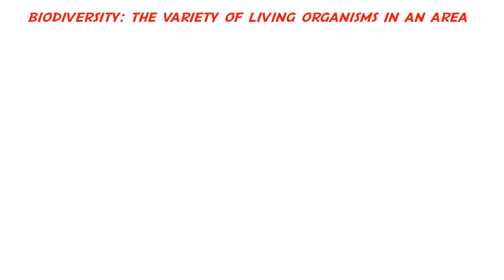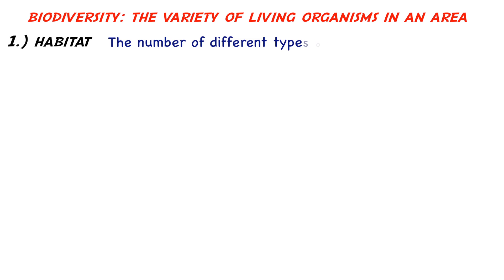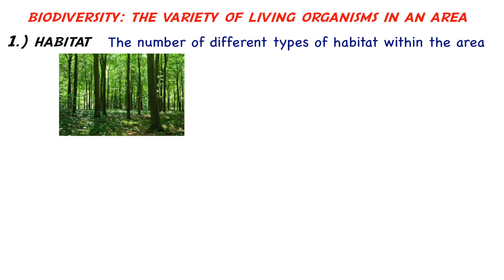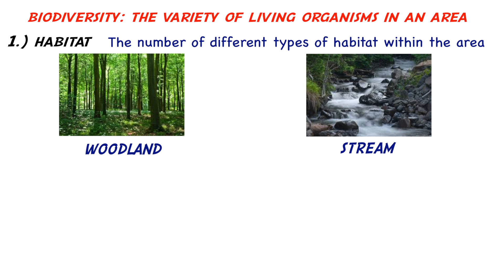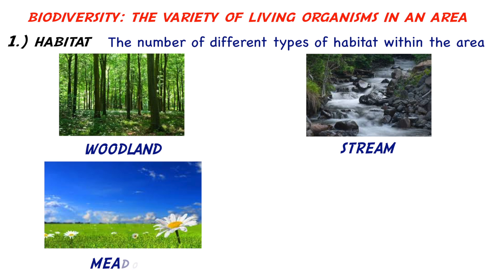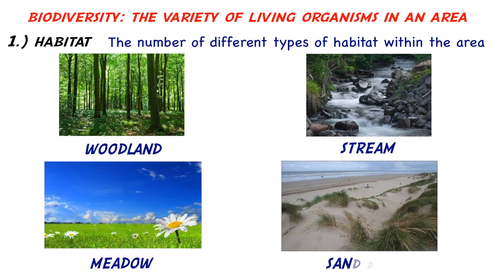Habitat diversity can be defined as the number of habitats in an area. Some examples of types of habitat you should know are woodland, stream, meadow, and sand dune.